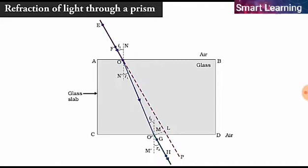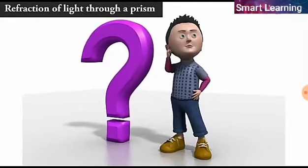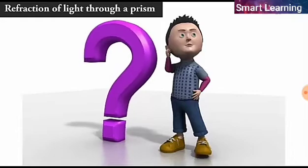However, it is slightly displaced laterally. But the question is, how would light get refracted through a transparent prism?